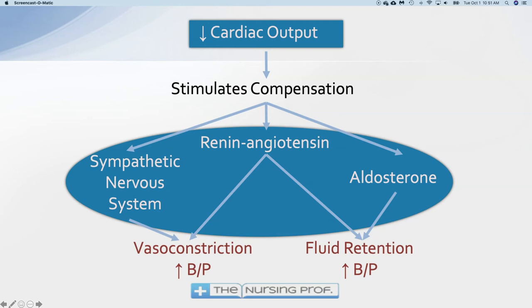But look at what happens with these compensatory mechanisms — if we have vasoconstriction, the heart is trying to pump against a constricted vasculature, increasing afterload. That's not going to help. We have fluid retention, but the heart can't even pump what it's already getting, and now we're giving it more. So edema starts to form and we cause further failure of the heart as a result of all that retained fluid.